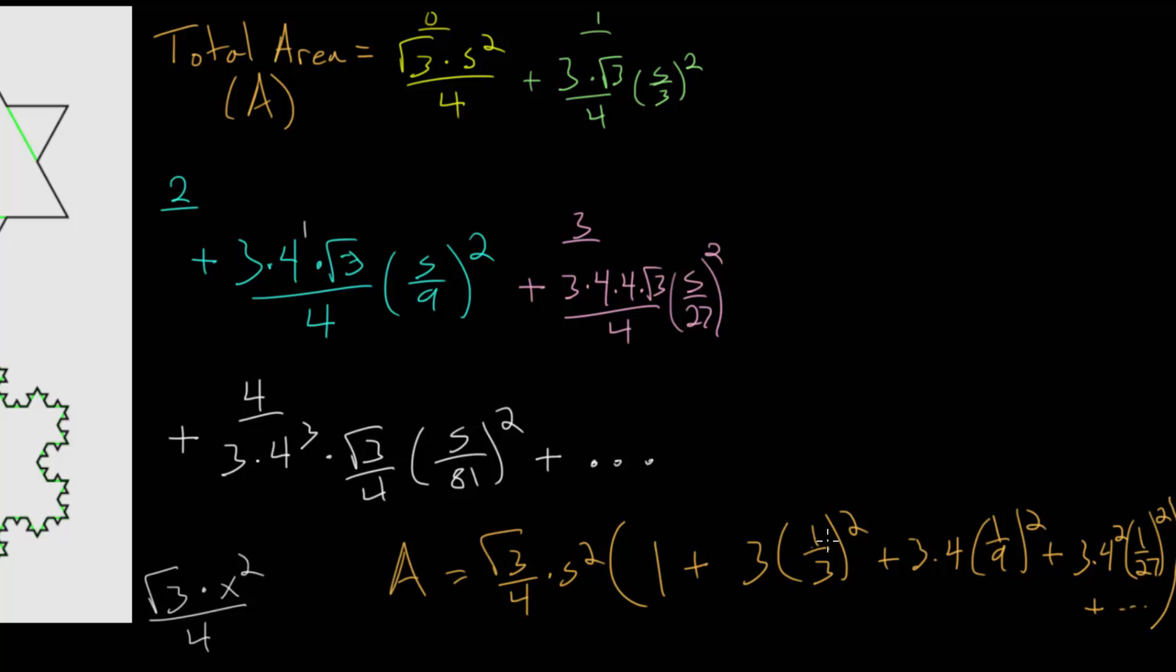Now notice that for each of these squared expressions we have different powers of 3 in the denominator. This is 3 to the first, this is 3 squared, this is 3 cubed.